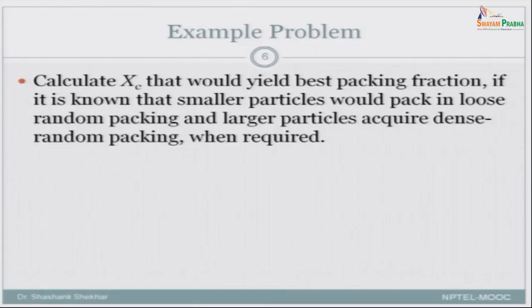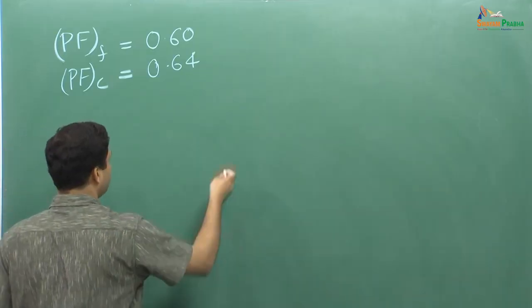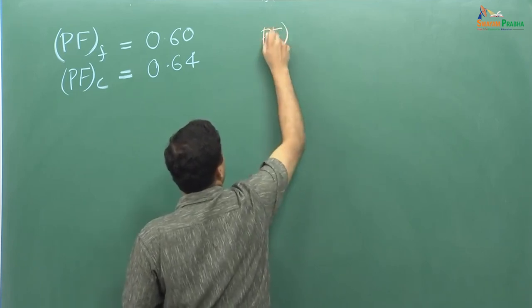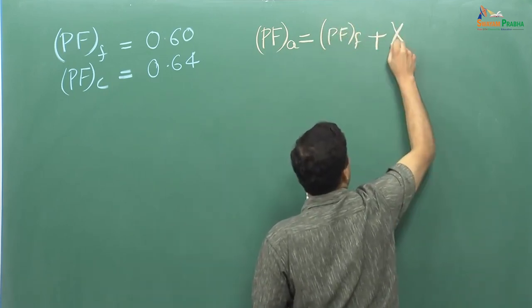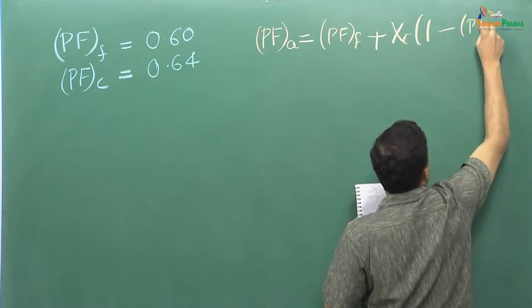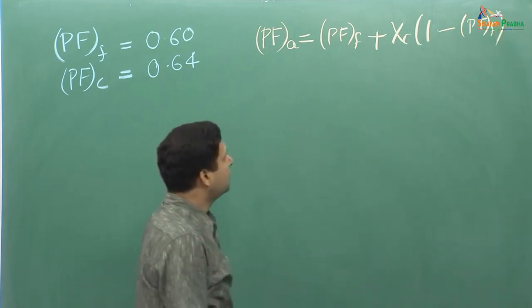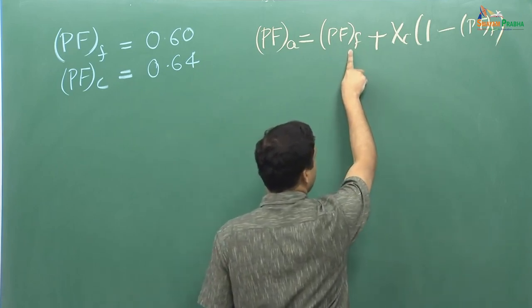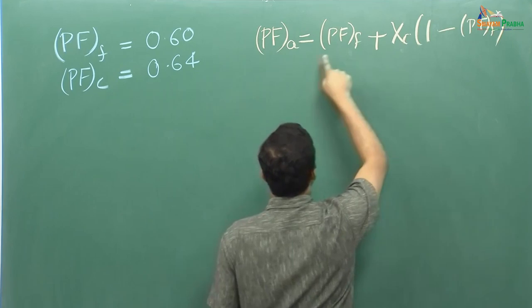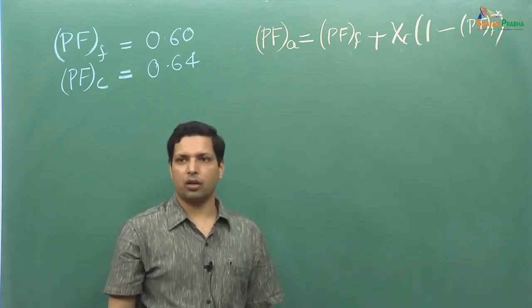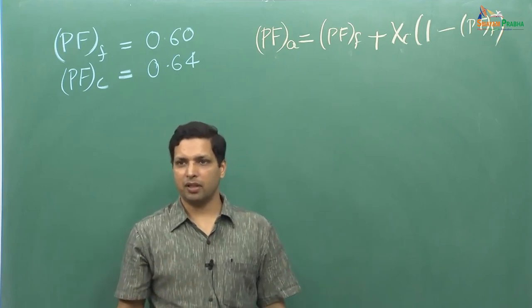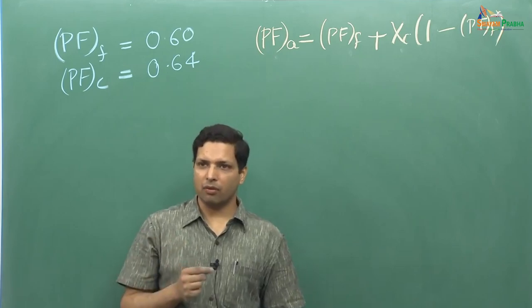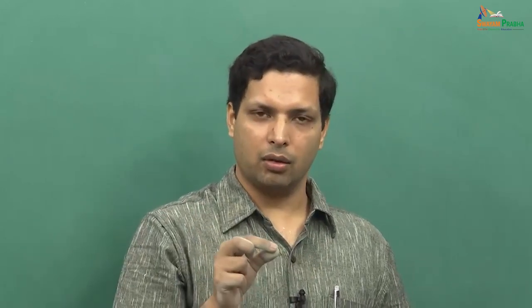Now we have to calculate Xc. The equation that deals with Xc is: packing fraction apparent equals packing fraction fine plus Xc times (1 minus packing fraction fine). We know packing fraction fine and we have to calculate Xc. We do not know packing fraction apparent yet, but this represents the condition when you are putting coarse particles in place by displacing fine particles. We get maximum efficiency when all coarse particles have taken their place and fine particles are only in the pockets, in the pores.